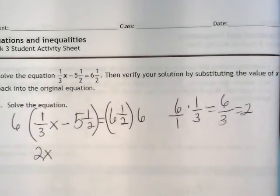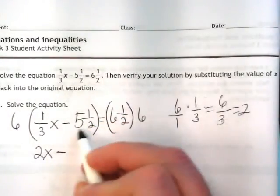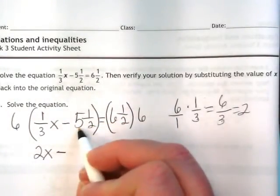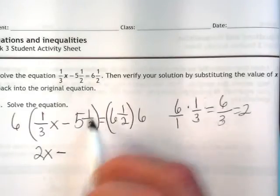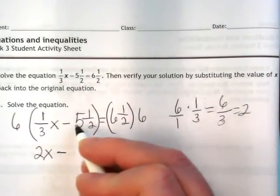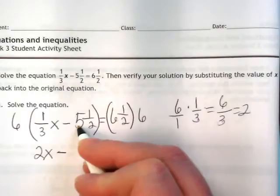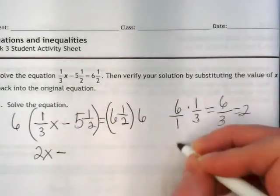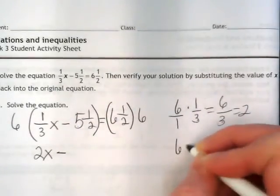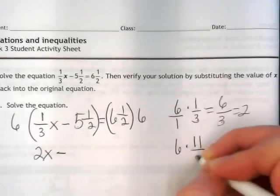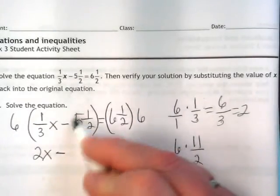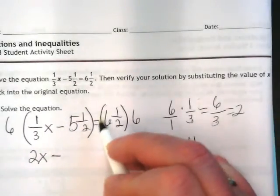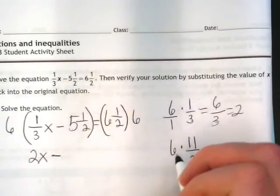Do you guys see that? Minus, we're still going to have this whole number 5, we're just getting rid of the fraction part of it. Well, let's do the whole thing. So if I do 2 times 5, I get 10 plus 1 is 11. So now we're going to do 6 times 11 over 2, because that's what this whole number is when I make it an improper fraction. Right now it's mixed, I made it improper. You guys see that?